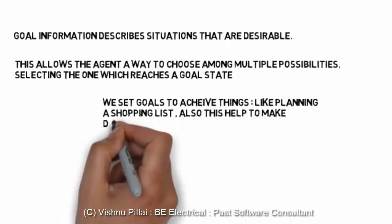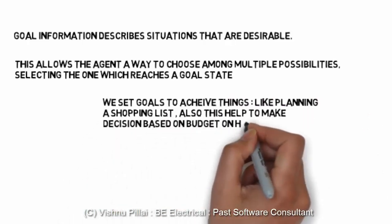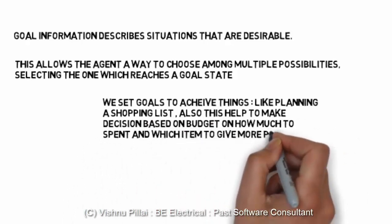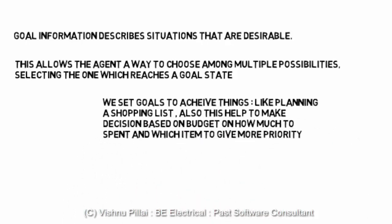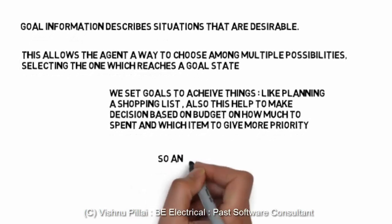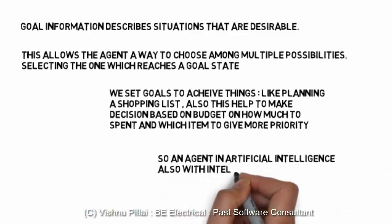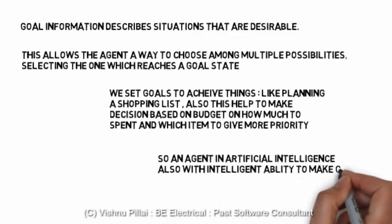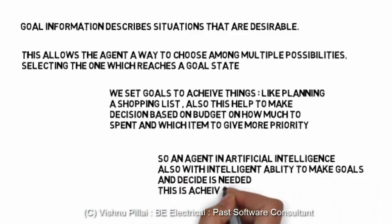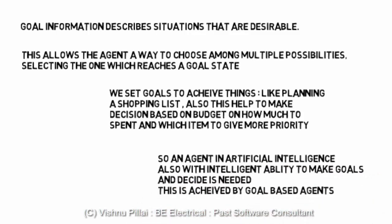Setting a goal helps us achieve things like planning a shopping list. This also helps us make decisions based on budget — how much to spend or which item to give more priority. If you have 10 items to buy but only a budget to buy 8 items, then planning will help us choose among the 8 items which fit within our budget. An artificially intelligent agent should also possess such capability to choose between different options based on goals.